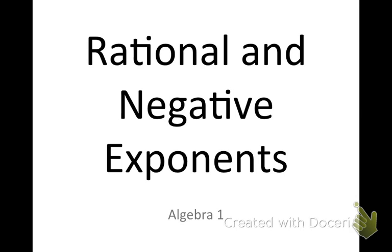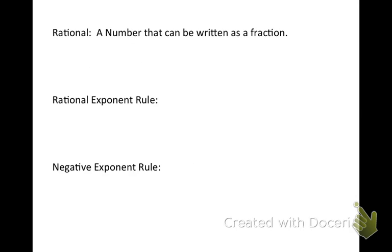Rational and negative exponents. First we're going to start with the definition of rational. Rational is a number that can be written as a fraction. An example would be one-half or eight-fourths. Those are all rational numbers.